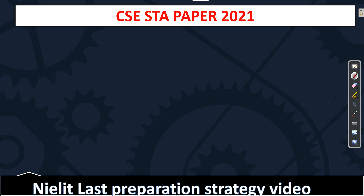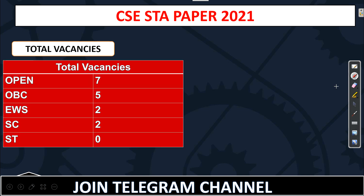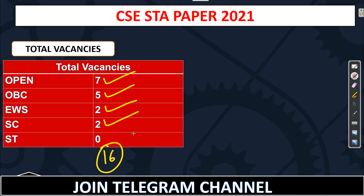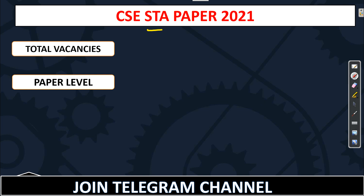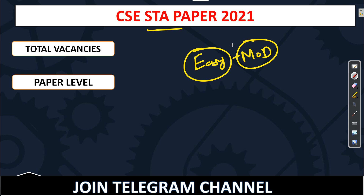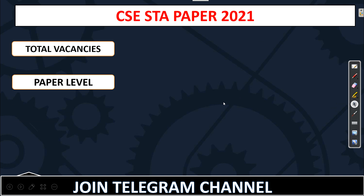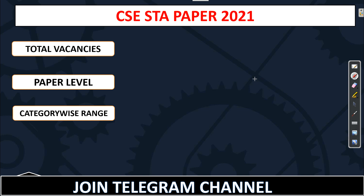Now let's start with the Computer Science STA paper. The total vacancies for CSE STA are: open 7, OBC 5, EWS 2, and SC 2 — so total 16 vacancies for Computer Science. Regarding paper level, the CSE STA paper is not very different from last year and can be considered easy. As per many student responses, the paper is easy to moderate level. So this year's 2021 STQC NILAT paper was easy to moderate.